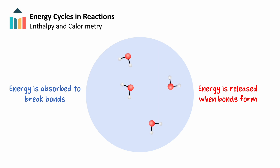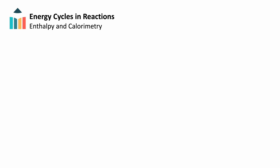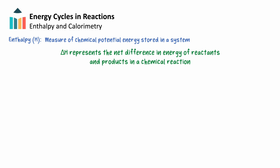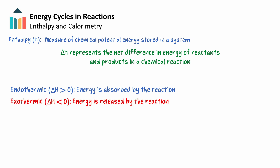Energy can be transferred in multiple ways, like heat, work, or radiation. For now, we'll focus on the transfer of heat, and we'll use enthalpy to describe these energy changes. Enthalpy, H, is a measure of the chemical potential energy stored in a system. Change in enthalpy, delta H, represents the net difference between the energy of the reactants and products. If more energy is absorbed than released, delta H is positive, and the reaction is endothermic. If more energy is released than absorbed, delta H is negative, and the reaction is exothermic.